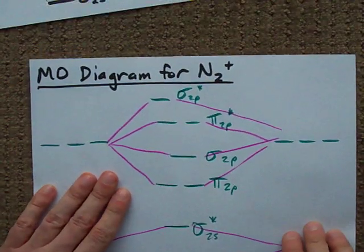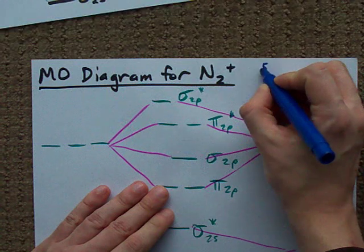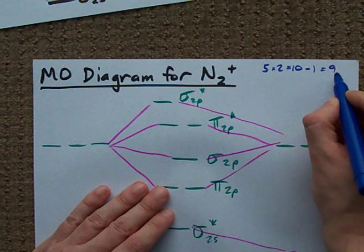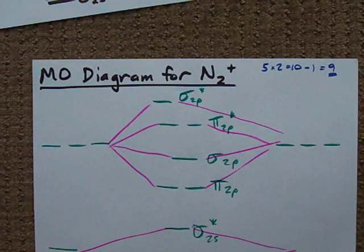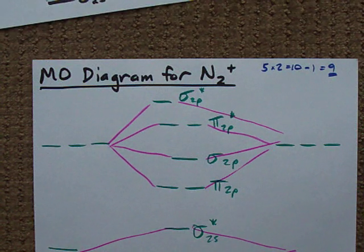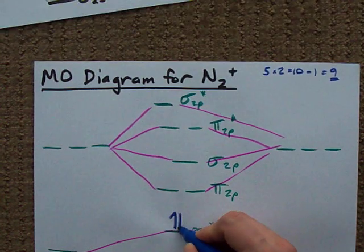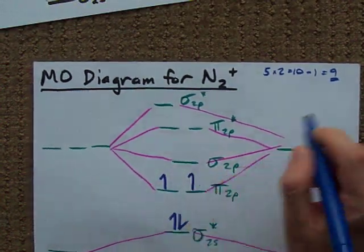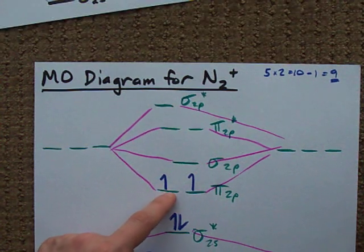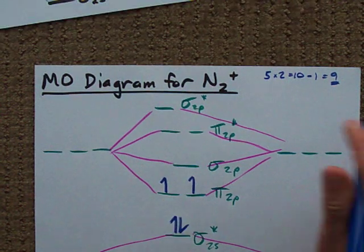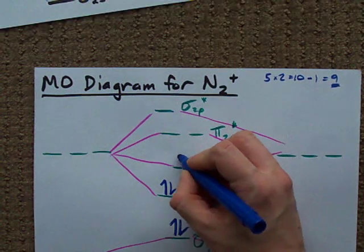N2+: each N brings 5 electrons with it, so that makes 10. But we have a plus charge, so we're taking away 1 — we need to fill this with 9 electrons. What I haven't shown you is that there's a 1s orbital that's already filled here, but nonetheless, in my valence shell I need 9 electrons. I'm spreading out the electrons so that there's one in each equivalent energy orbital before I start doubling up — that gives us all 9 electrons filled in.